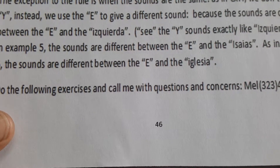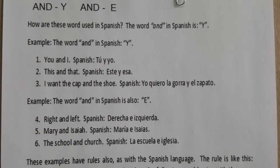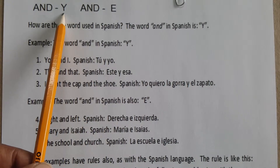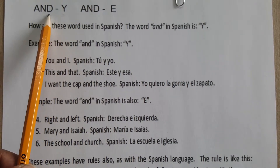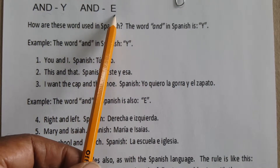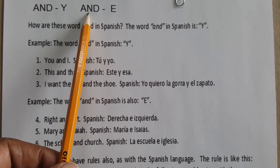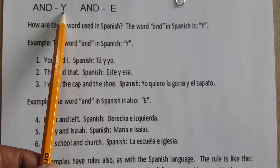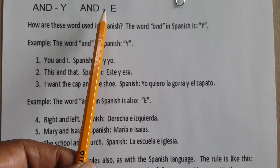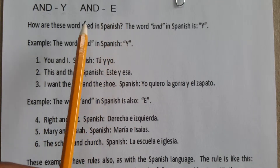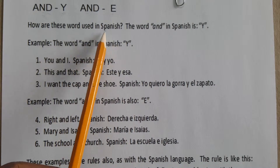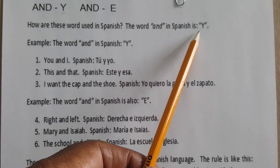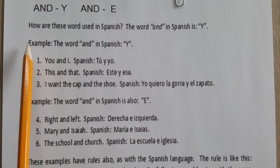Turn to page 46 in our workbook. This is a word: 'y' — it means 'and' in English. This is another word: 'e' — it also means 'and' in English. How do we pronounce them? 'y' and 'e'. So how are these words used in Spanish? The word 'and' in Spanish can be either 'y' or 'e'. Let's look at some examples.